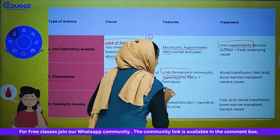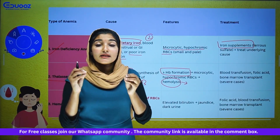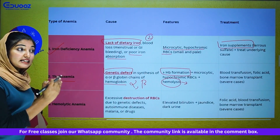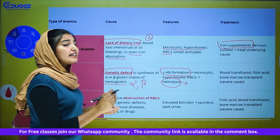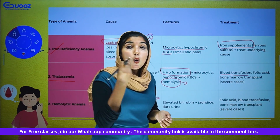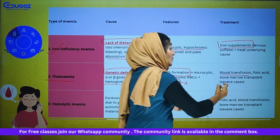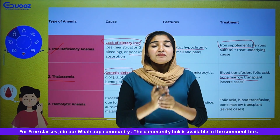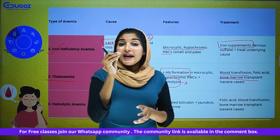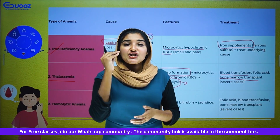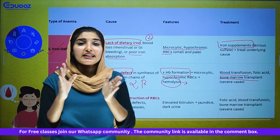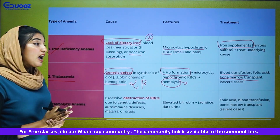There is also hemolysis — rupture of RBC. Treatment for thalassemia: blood transfusion, folic acid supplementation, and bone marrow transplant in severe cases. Bone marrow is soft tissue and the major site of synthesis of blood cells. Transplantation of the bone marrow is done in severe cases.